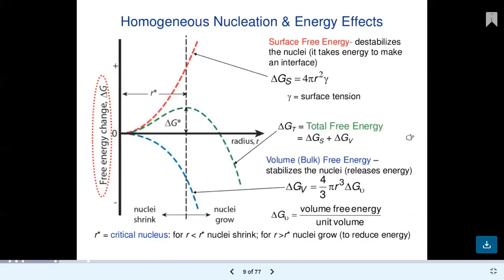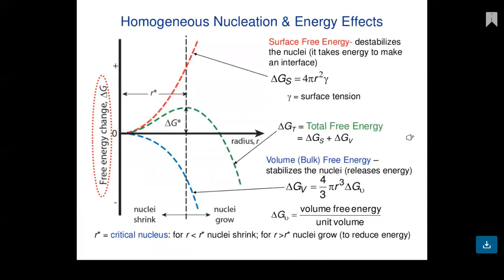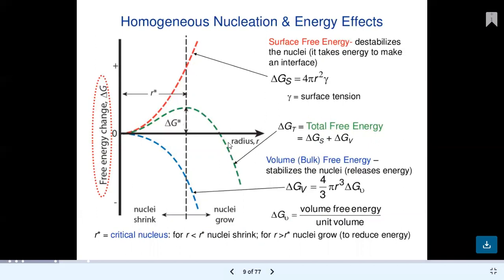For homogeneous nucleation and energy effects, the graph shows free energy change delta G versus radius R. Delta G_S increases as radius increases. The total delta G_T curve increases and then decreases. Delta G_V gradually decreases. This is the homogeneous nucleation and energy effect.